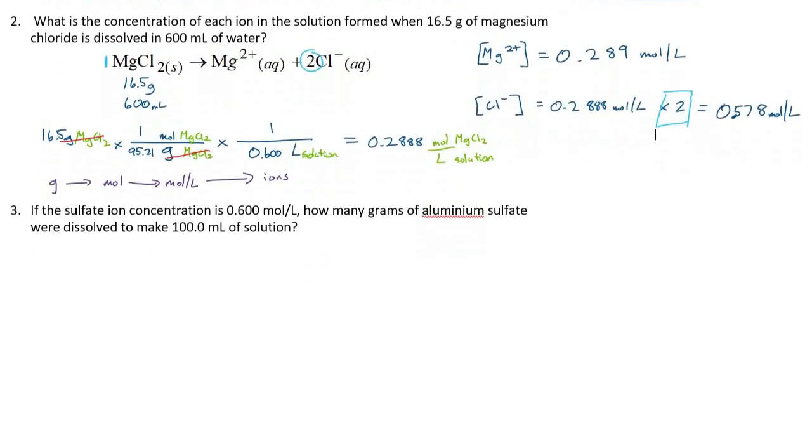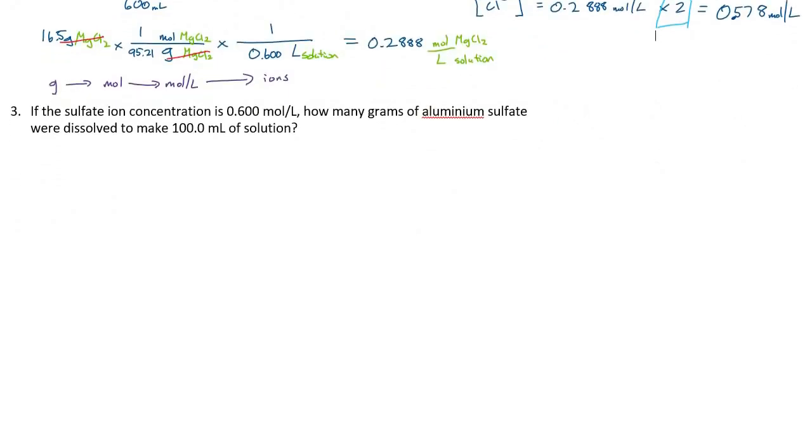Our last example here, if the sulfate ion concentration is 0.600 moles per liter, how many grams of aluminum sulfate were dissolved to make 100 mils of solution? As always, the first thing to start with is our balanced dissociation equation. If you take aluminum sulfate and dissolve it in water, you're going to get two aluminum ions and three sulfate ions. In this case, the information we're given is a little bit different because we are told that the sulfate ion concentration is 0.600 moles per liter. I think the safest way here is to use a single long equation, make sure our units are doing the proper things.